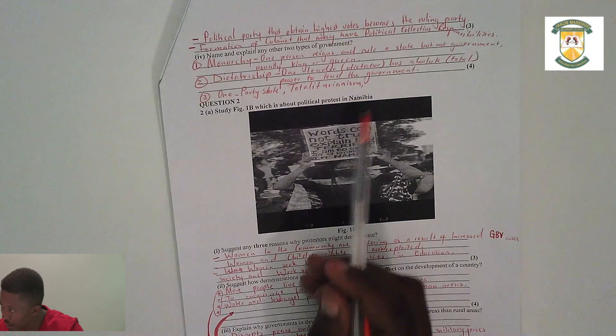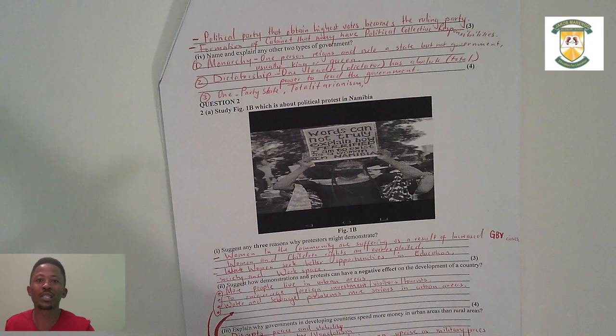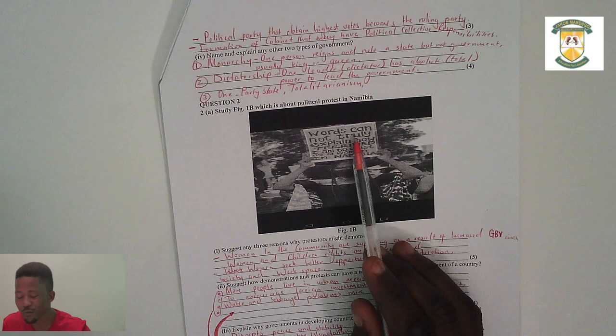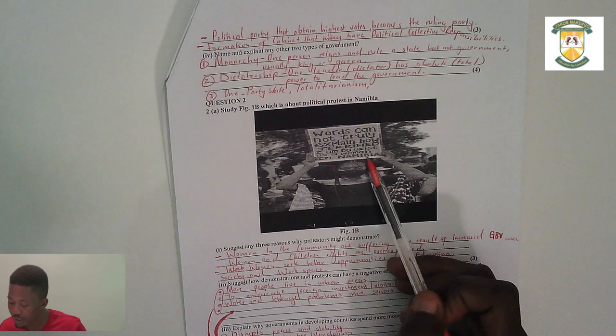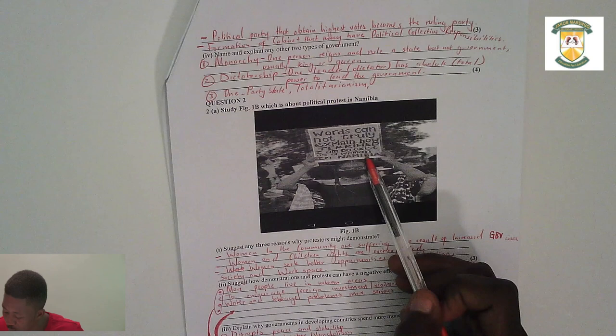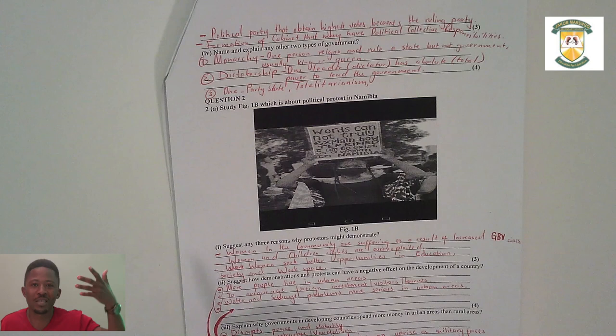Question two says: study Figure 1b, which is about political protest in Namibia. Always study the diagram before reading the question — what is it about, what does it entail? In this diagram, a demonstrator holds a poster that reads: 'Words cannot truly explain how terrifying it is to exist as a woman in Namibia.' That is a very strong statement giving you many ideas about what the question is about.